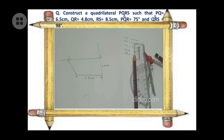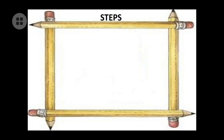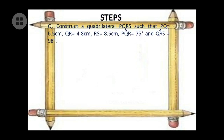For the steps of construction, you can write them in your own words — just be clear with the concept of how to draw it. This applies to angle construction, triangle construction, angle bisector, and perpendicular bisector as well. The naming and base choice can vary; what matters is that you can draw it correctly.